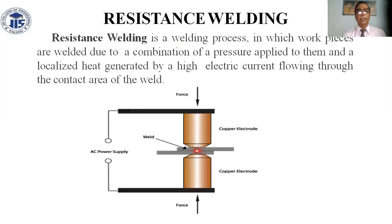Resistance welding is a welding process in which workpieces are welded due to a combination of pressure applied to them and localized heat generated by a high electric current flowing through the contact area of the weld. The copper wheel is the torch and the welded area is called a nugget; force and AC power supply are applied.